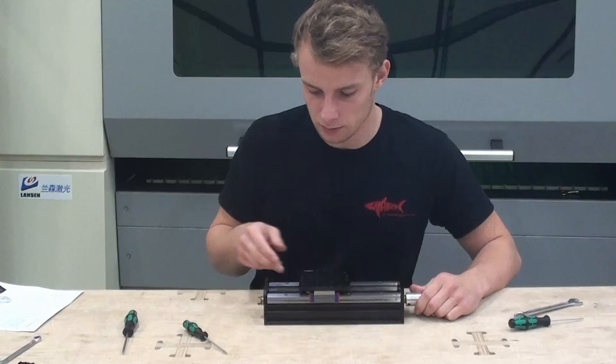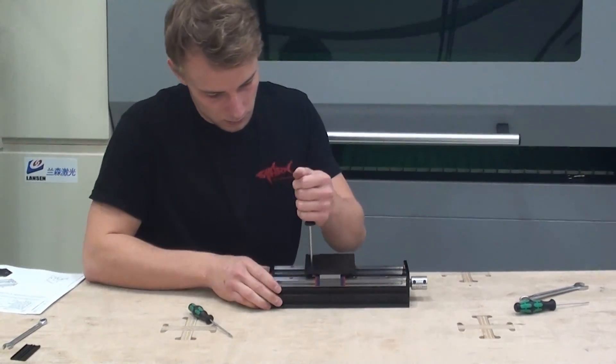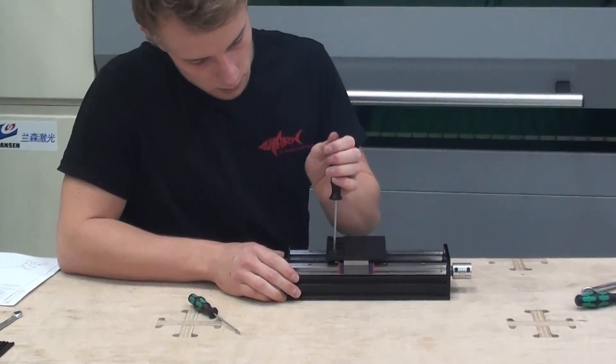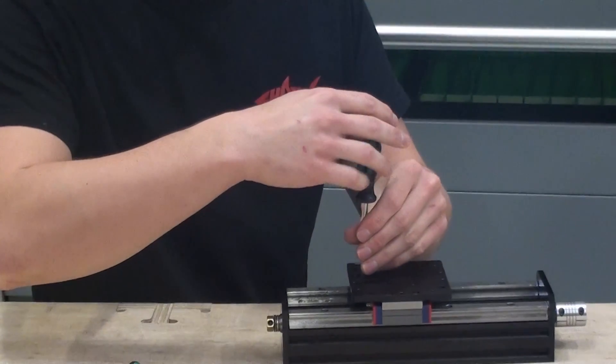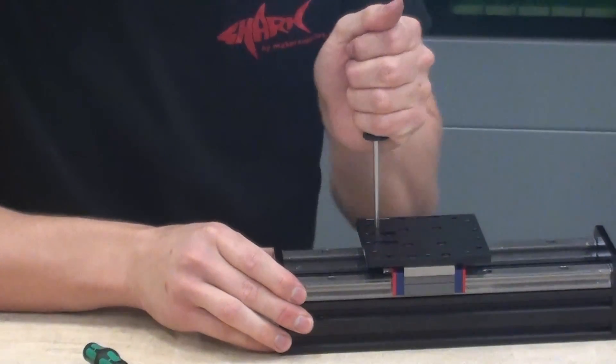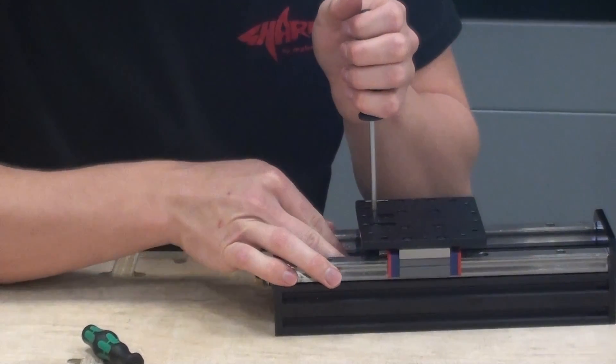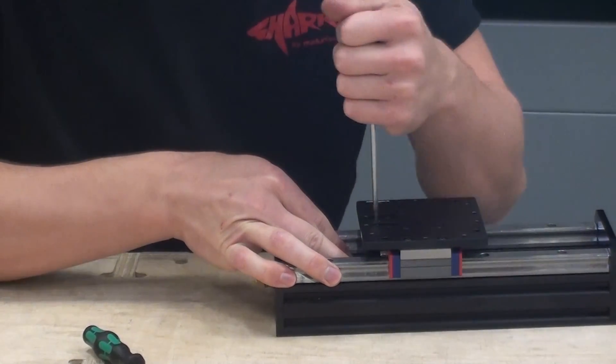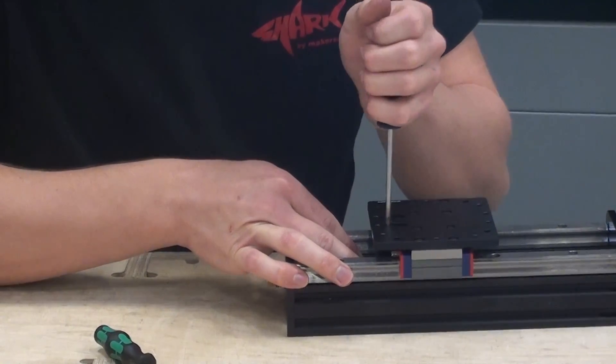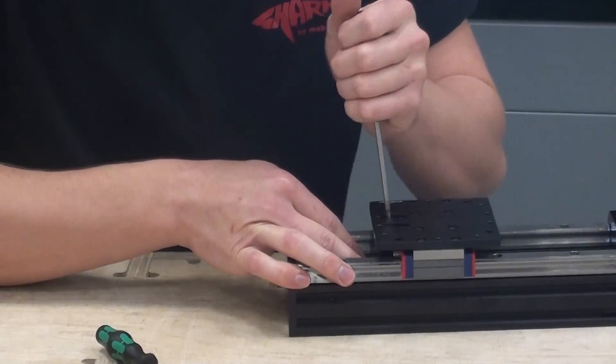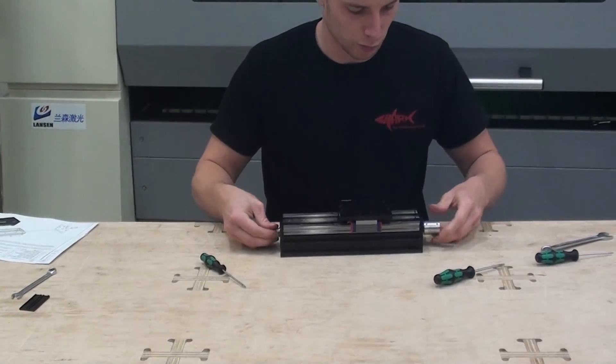At this point we are ready to tighten the anti-backlash nut. I like to just tighten both screws and undo them just a little bit. And then try to tighten them in a way so they don't pull the anti-backlash nut at an angle against the acme rod. Now I will just test that it moves smoothly.